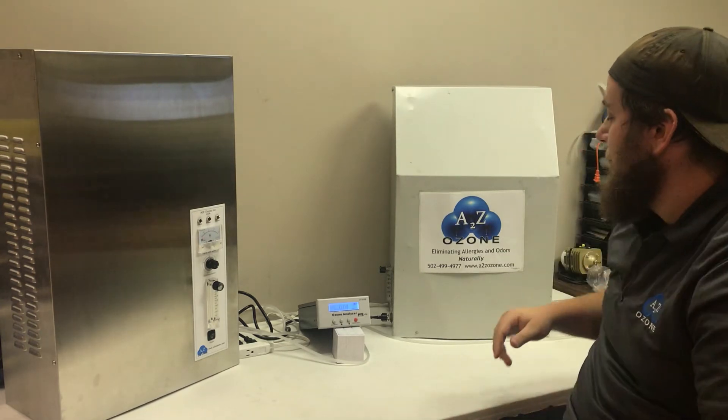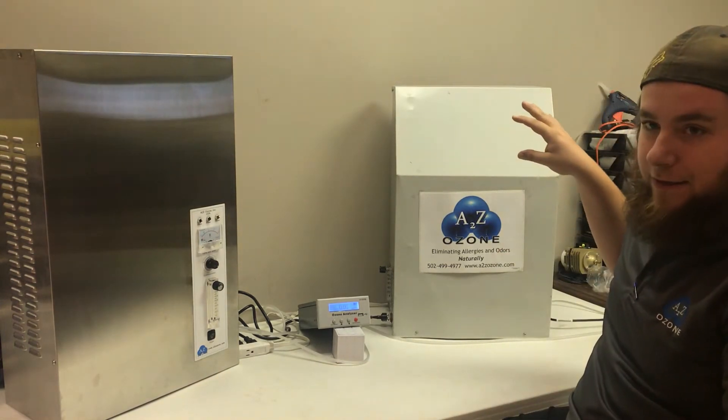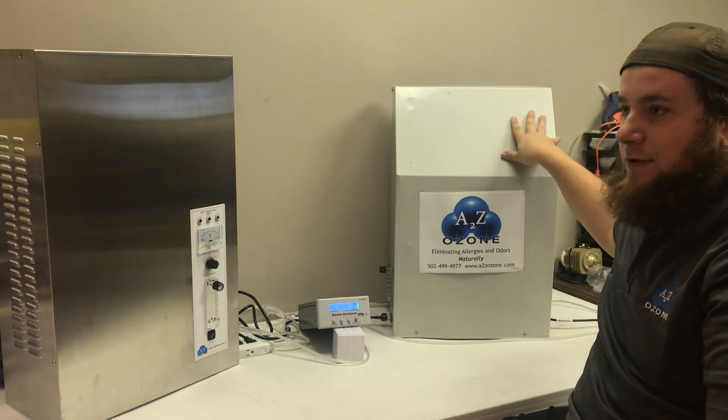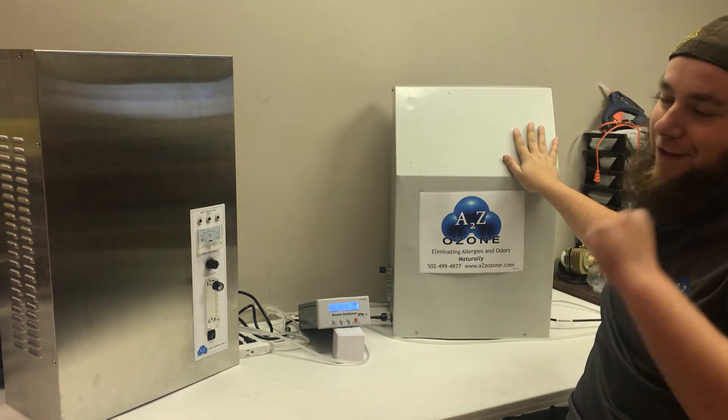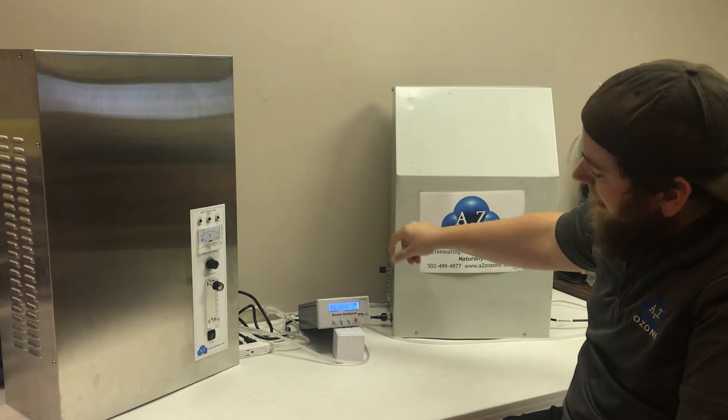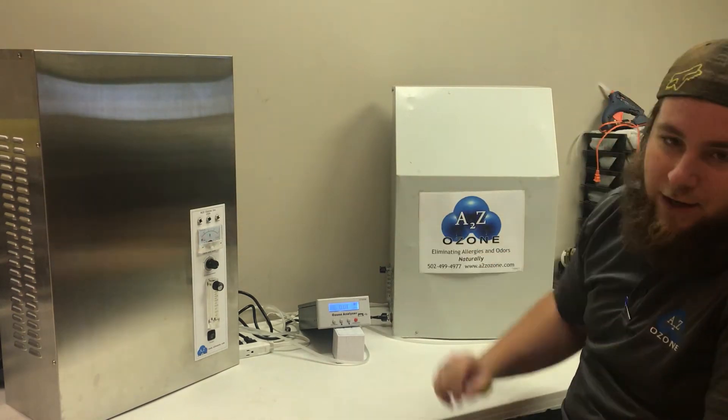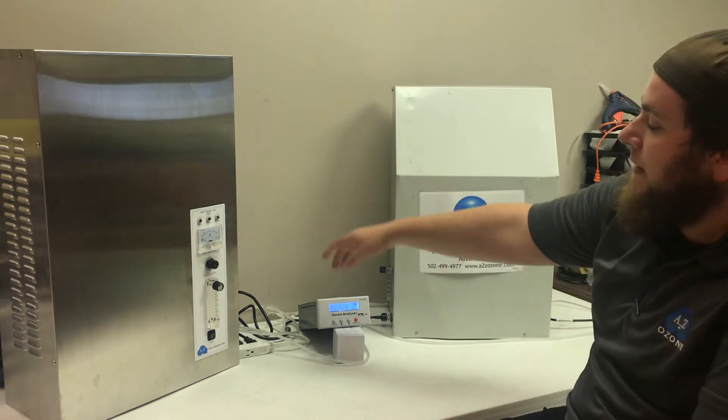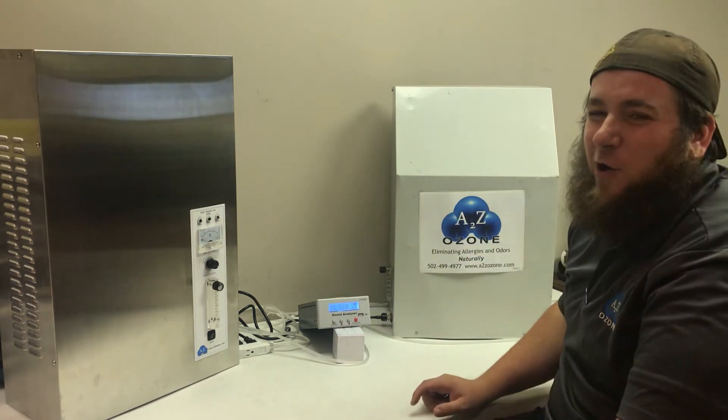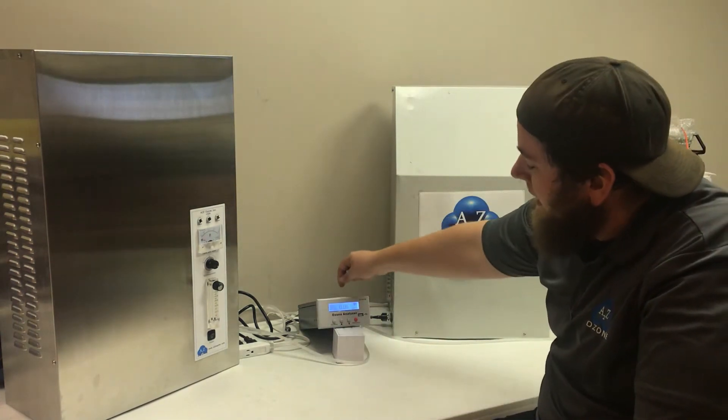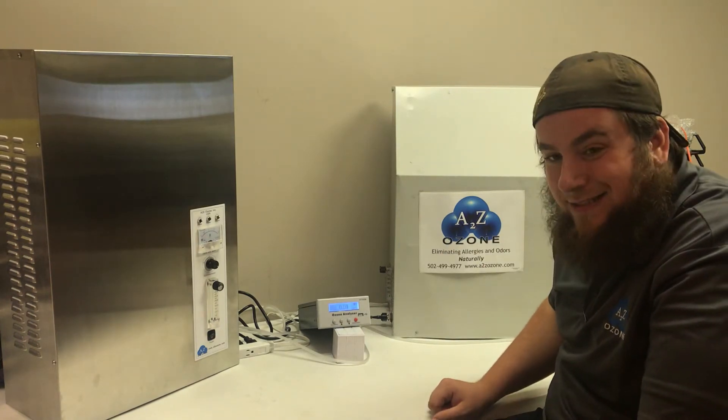Alright so then what you're gonna do is you're gonna take a piece of your flexible tubing and you'll hook it from your oxygen generator to your O2 IN of your unit. And then from there you'll take the ozone out and you'll connect it to the back of the unit where it says ozone in.